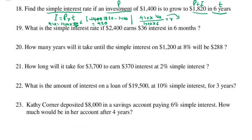5% is the answer. So r is 5%. Problem 19: what is the simple interest rate r? Simple interest formula is I equals prt.